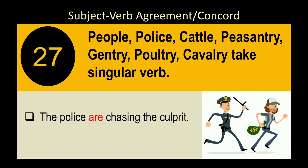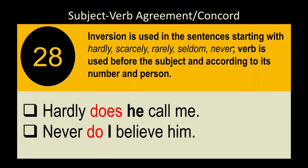Rule 29: Words like 'people,' 'police,' 'cattle,' 'peasantry,' 'gentry,' 'cavalry,' etc. always take plural verbs. Examples: 'The police are chasing the culprit.' 'The cattle are grazing.' 'People are moving here and there.'